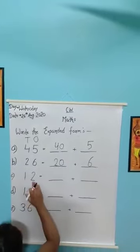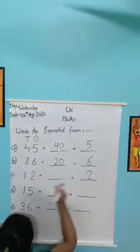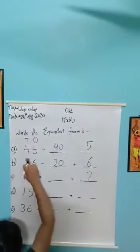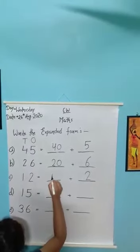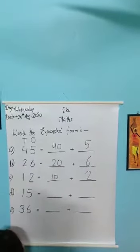Yahan pe hai, twelve diya hai, two ki value batani hai, one ki value. Two ki value ones hai, so yahan pe, two write karenge, aur one ki value tens hai, so yahan pe, ten likhi hai. Ten plus two barabar, to beta twelve hota hai, na?